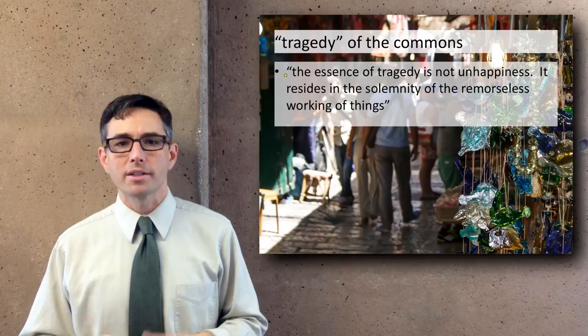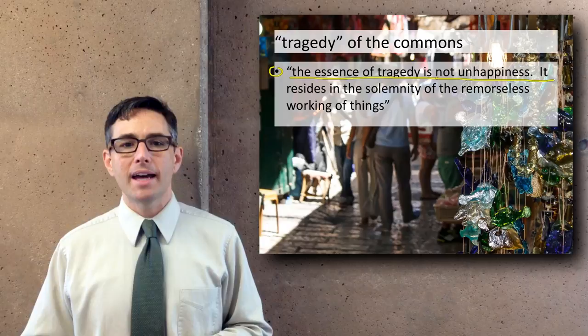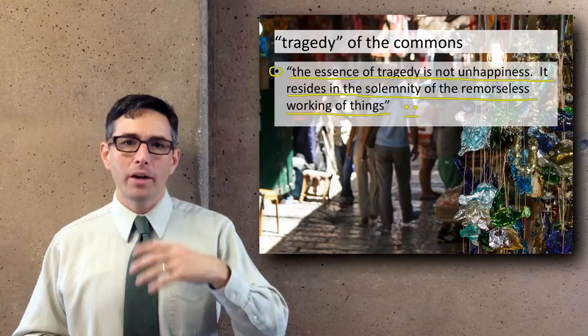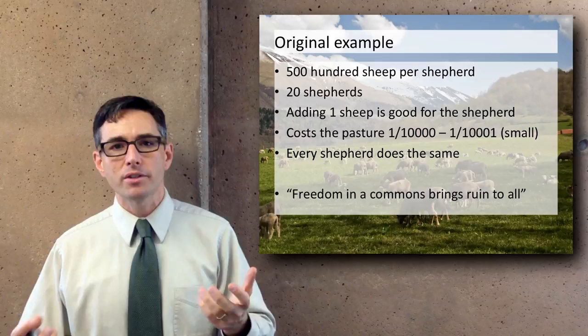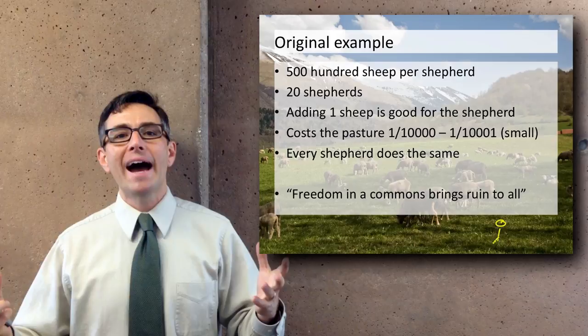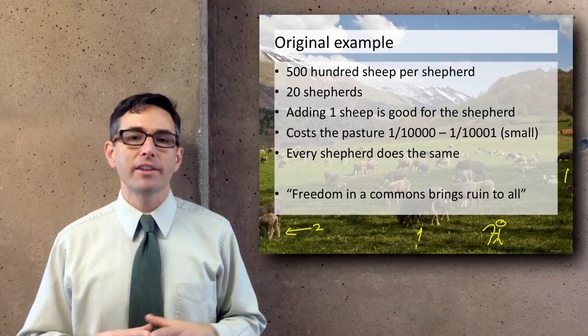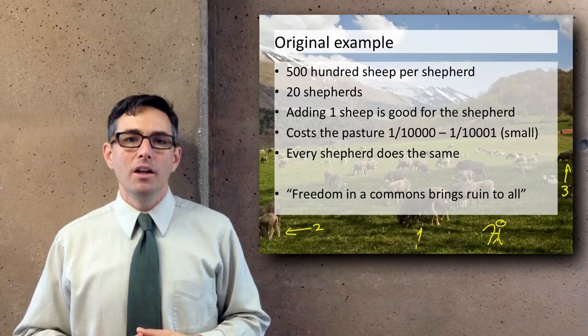When Hardin says the word 'tragedy,' he doesn't mean just something sad, but rather the dramatic or philosophical use of the word — that the essence of tragedy isn't unhappiness, but resides in the solemnity of the remorseless working of things. He then referred back to a pamphlet from the 1700s introducing this idea in the context of a shepherd and a pasture. Picture an open pasture open to everyone, where each shepherd in a village grazes a flock of sheep in common. Let's say there are 500 sheep per shepherd and 20 shepherds.